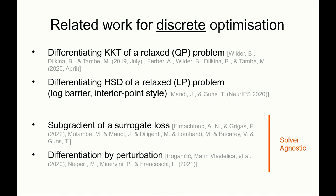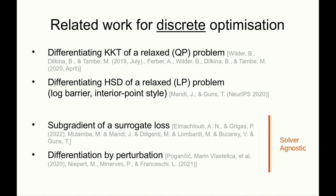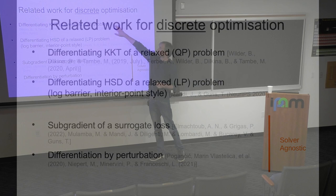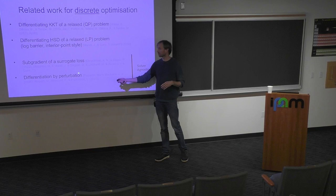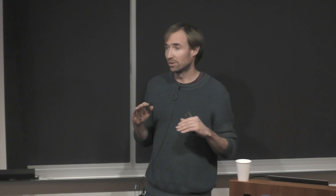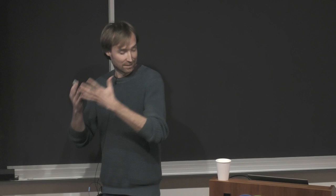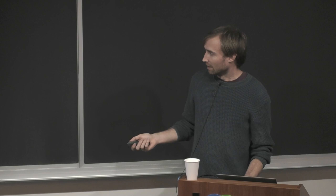What I actually want to talk about today is this other class of problems: solver-agnostic methods for decision-focused learning. The previous approach assumes you have a quadratic or linear program and differentiates over KKT or HSD. What's nice about solver-agnostic methods — either with surrogate losses or by perturbation — is that it doesn't matter what kind of solver you use. It doesn't need to be a mixed-integer programming solver; it can also be a constraint solver, which is what we typically use.